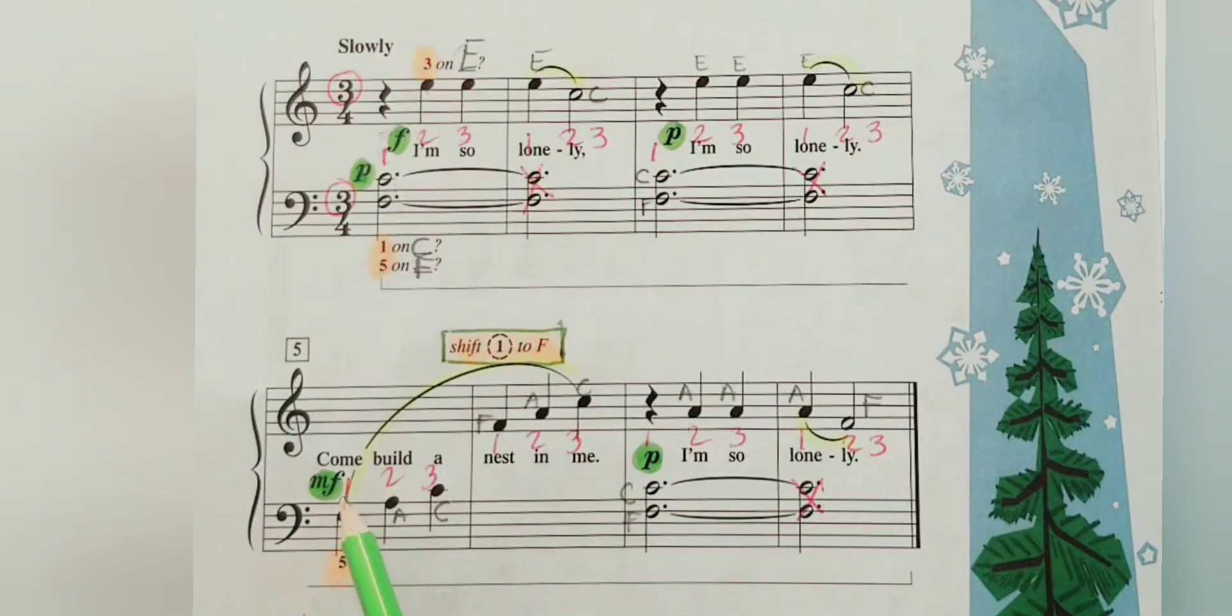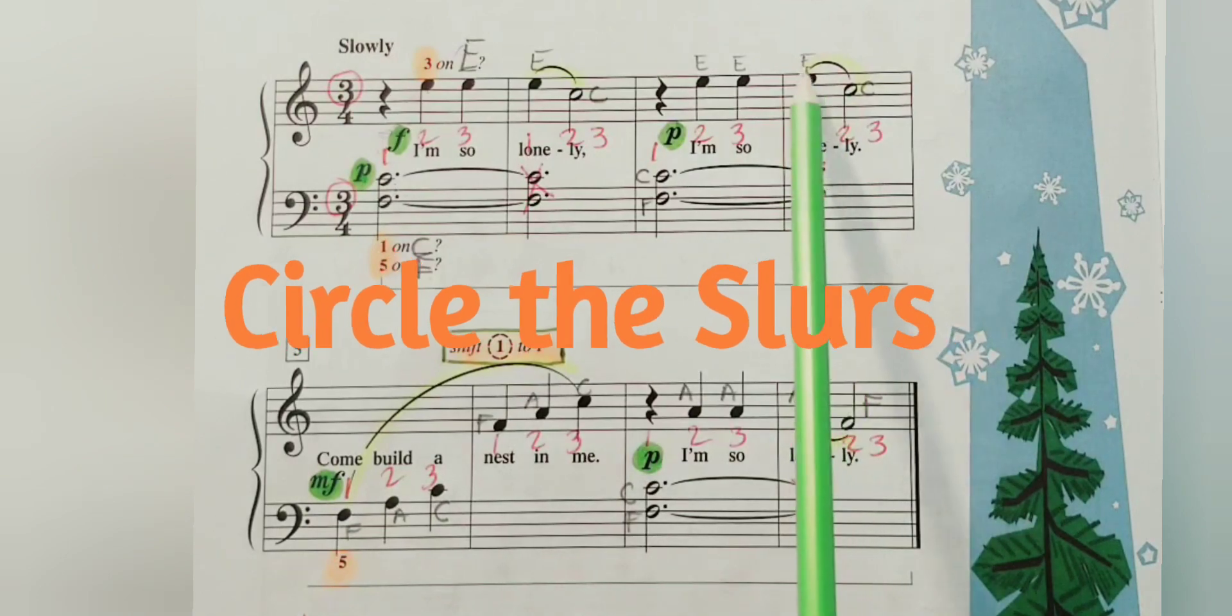That's why it's important to write the counts in the middle of the two staffs. You can highlight also your dynamics. You have a lot of changes on the dynamics on this piece, and also your legatos or slurs.